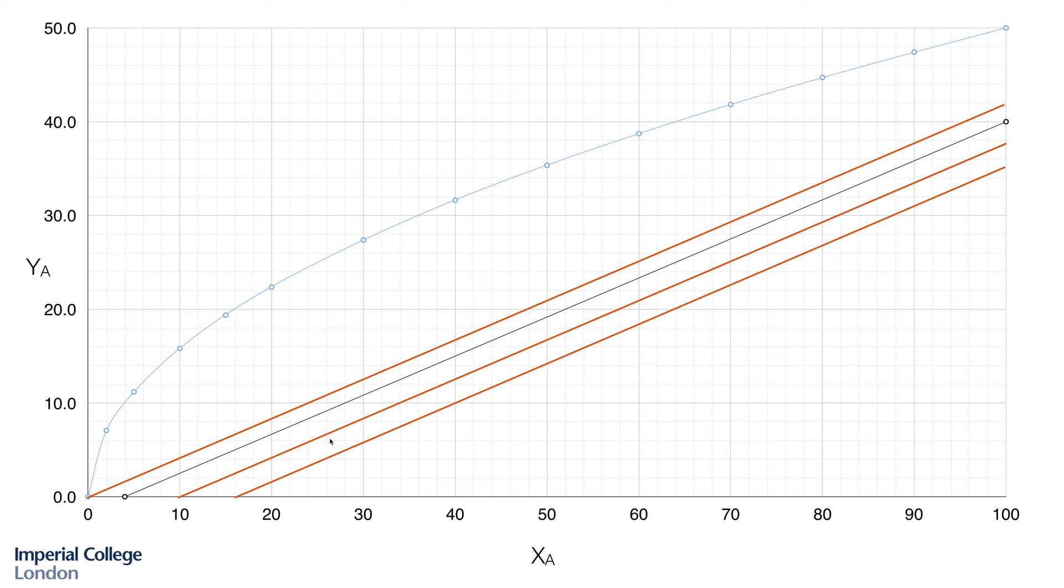Well, the final piece of information that allows us to determine the exact position of our operating line is that we have three equilibrium stages. So if we take any one of these operating lines and step off the number of ideal equilibrium stages required to reach the endpoint, we will find that only this one, the black one, satisfies that condition. Let's get started.